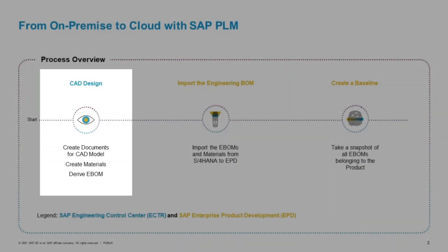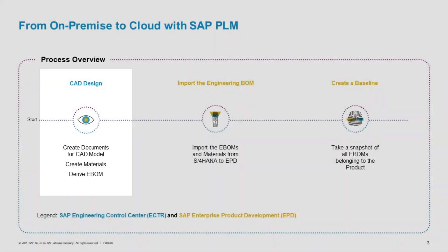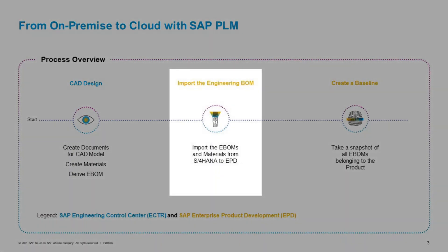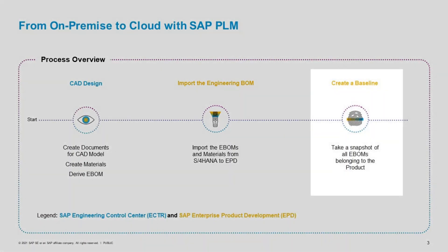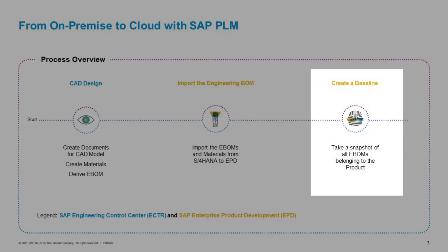We start the process by storing a CAD model via SAP Engineering Control Center out of the CAD system in SAP S/4 HANA. We create materials and engineering BOMs for the CAD model. As a next step, we import the engineering BOM out of SAP S/4 HANA into SAP EPD product structure. During the last step, we create an as-engineered baseline in SAP EPD configuration management, ensuring a well-documented and compliant development process.